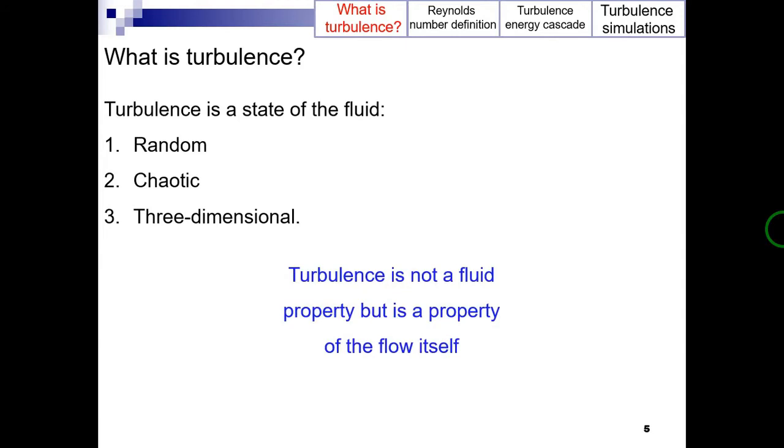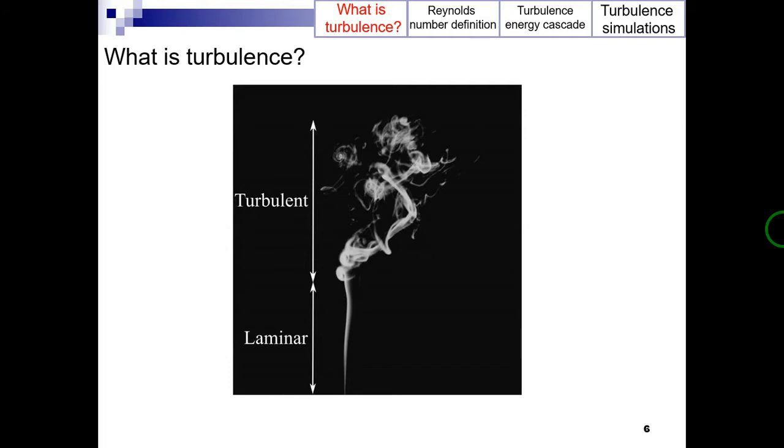So let's see, what is turbulence? Turbulence is in fact a state of the fluid which is random, chaotic and three-dimensional. Therefore, an important point here is that turbulence is not a fluid property, but it is a property of the flow itself. Turbulence results in increased energy dissipation, mixing, heat transfer and drag. For instance, this figure shows the presence of turbulence in smoke from a cigarette. The transition of laminar flow to turbulent flow can be clearly observed.